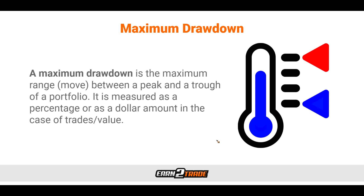Now that we know what drawdown is, we can talk about maximum drawdown, which is the maximum range or move between a peak and a trough of a portfolio, measured as a percentage or as a dollar amount. Investors take maximum drawdown, also referred to as MDD, as an essential metric to evaluate downside risk associated with a particular investment over a period of time. The maximum drawdown takes into account only the magnitude of the largest drawdown — it doesn't consider the frequency of big losses or how long it's taking to get back to peak.